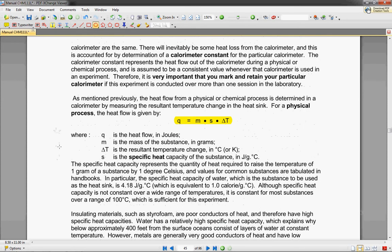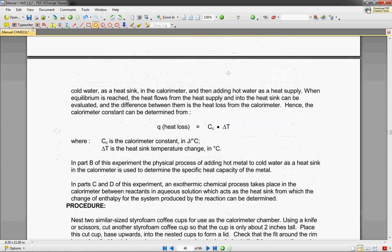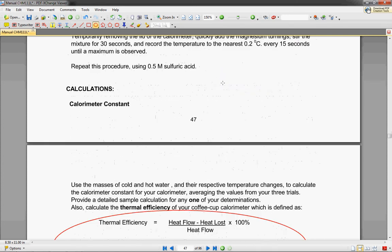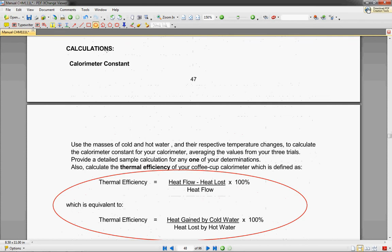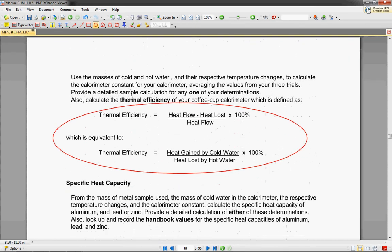So, there are a couple things that we need to know. We need to know the calorimeter constant, and that is how efficient is our calorimeter. And so if you guys go here below into the calculations section, you will see that the thermal efficiency is given by the heat flow minus the heat loss over the heat flow times 100, and that's kind of a confusing measure. So essentially, if you look at this top part, how much heat did the cold water gain and how much heat did the hot water lose?